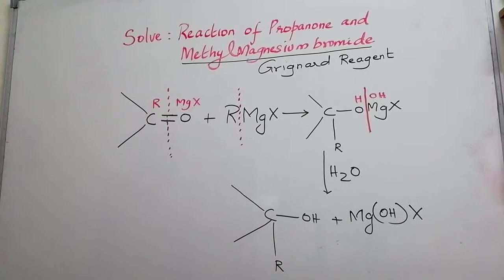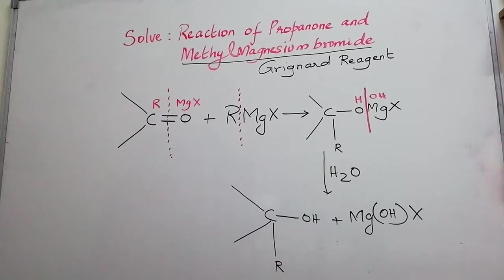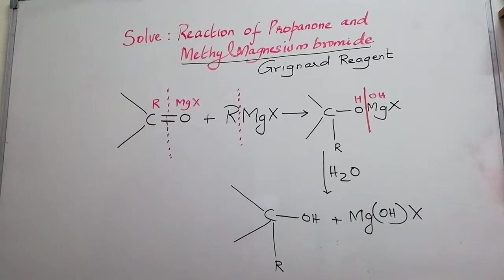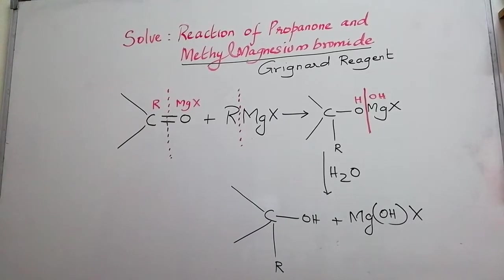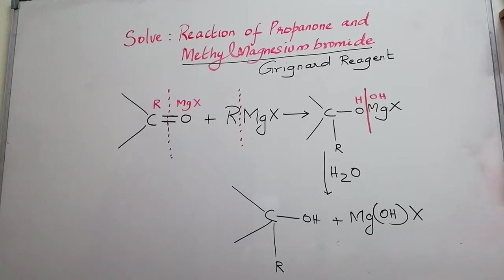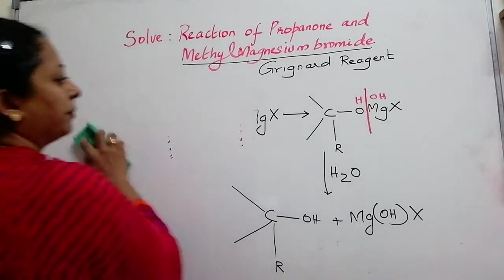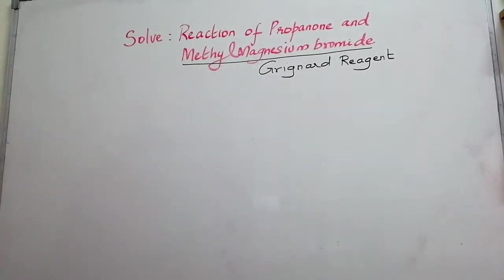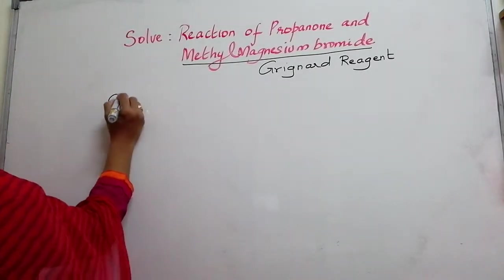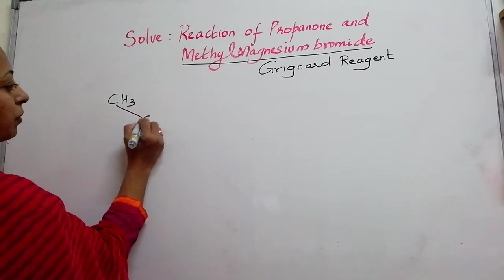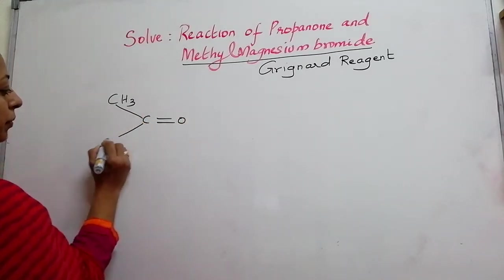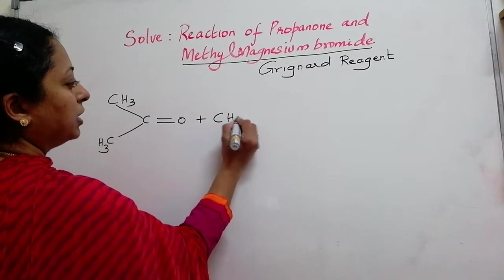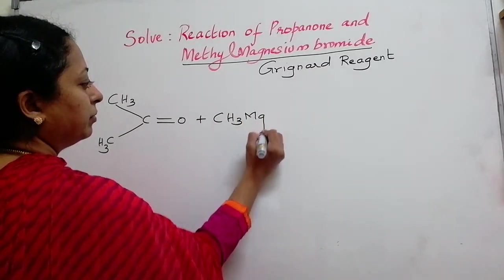So, based on the same mechanism, this is a mechanism which we have done it generally. Now, we are going to apply that on the example asked that is propanone and methyl magnesium bromide. Propanone. Methyl magnesium bromide.